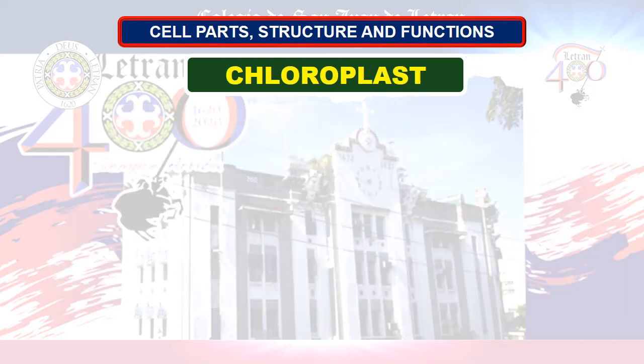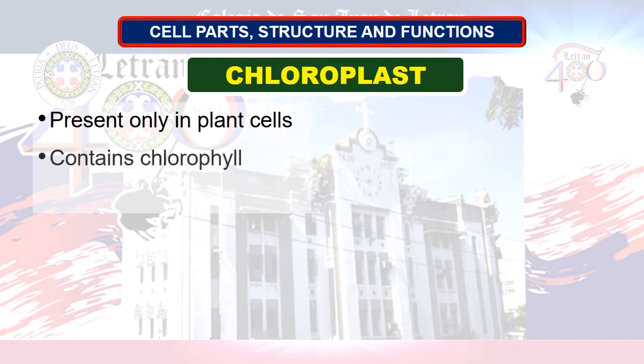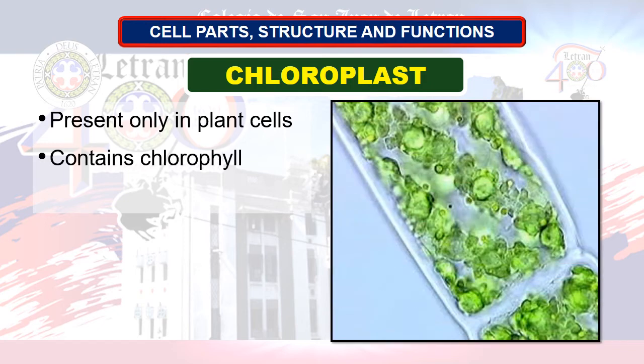Next in line: chloroplast. Chloroplast is only present in plant cells. Chloroplast contains chlorophyll, which is the green pigment of the plant cell. Chlorophyll is the site for photosynthesis, which is the process of food-making by autotrophs such as plants.